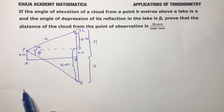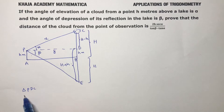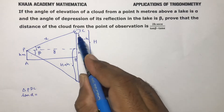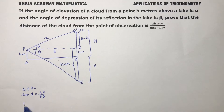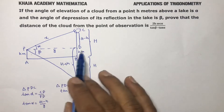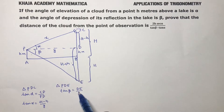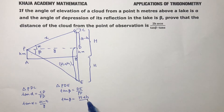In triangle PDC, tan(alpha) equals opposite over adjacent, so tan(alpha) = CD / PD = (H − h) / y. Similarly, in triangle PDE, tan(beta) equals DE over PD, so tan(beta) = (H + h) / y.